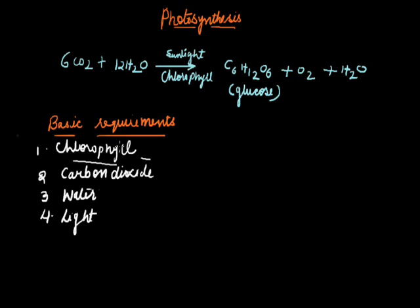Regarding chlorophyll, plants possess pigment molecules for absorption of light energy. There are three types of photosynthetic pigments: the green chlorophylls, the orange-colored carotenes, and the yellowish xanthophylls.